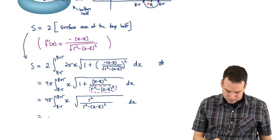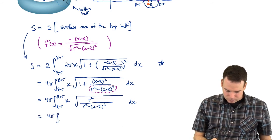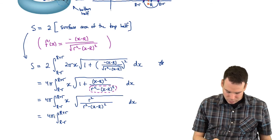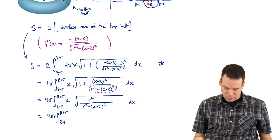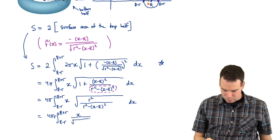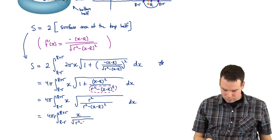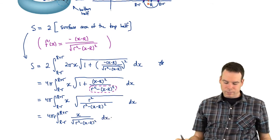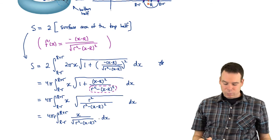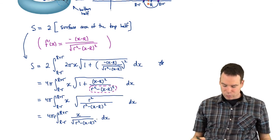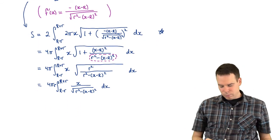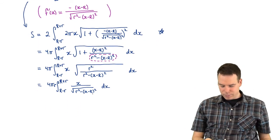If I put it over a common denominator, I see that when I add it to the other one that they will cancel. This (x - R)² will be negative in the numerator of the 1 but it's positive here so they will cancel. And what's left over is just an r² up top. Now when I take the square root, I get r, I can push that all the way up front because that's just a constant, and I get x / √(r² - (x - R)²) dx.